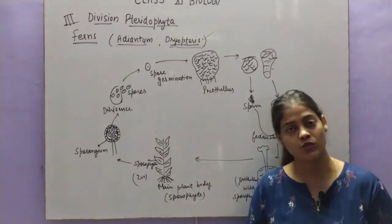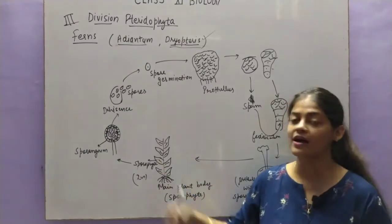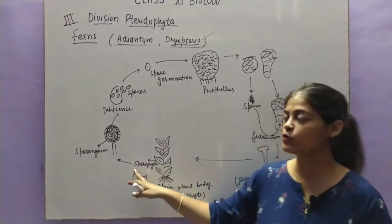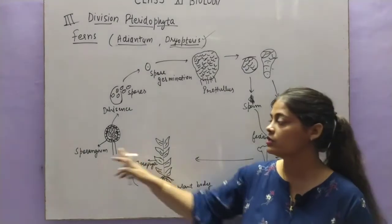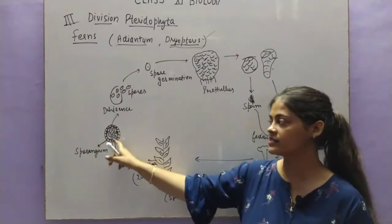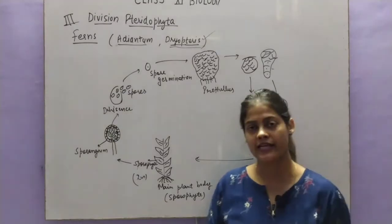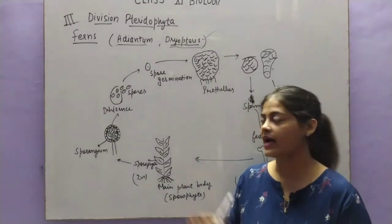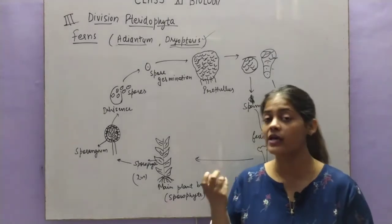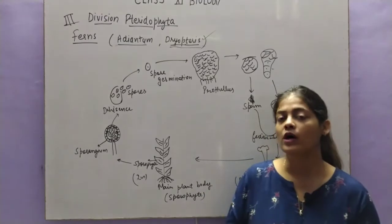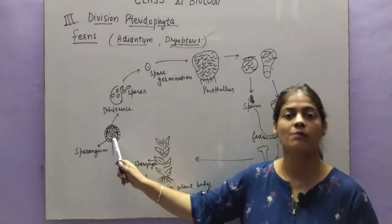Over the leaves there is a sporangium in which spores will be formed, and these leaves are called sporophylls — also called fertile leaves because they are going to form spores. Inside the sporophyll there is a sporangium, and inside the sporangium spore formation occurs. This is a young sporangium I have shown here. The spore mother cell is a diploid cell which undergoes meiosis to form spores.